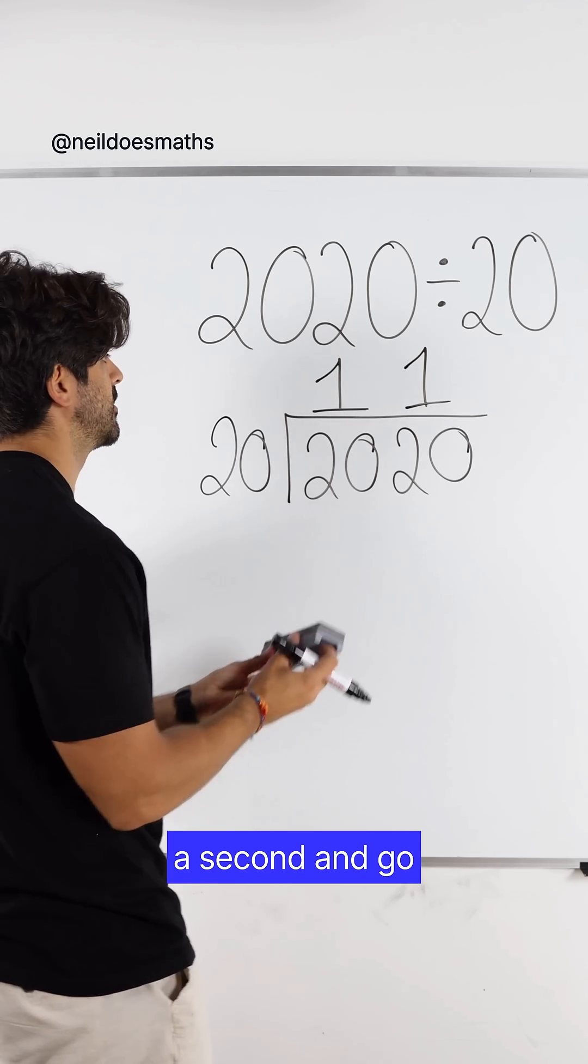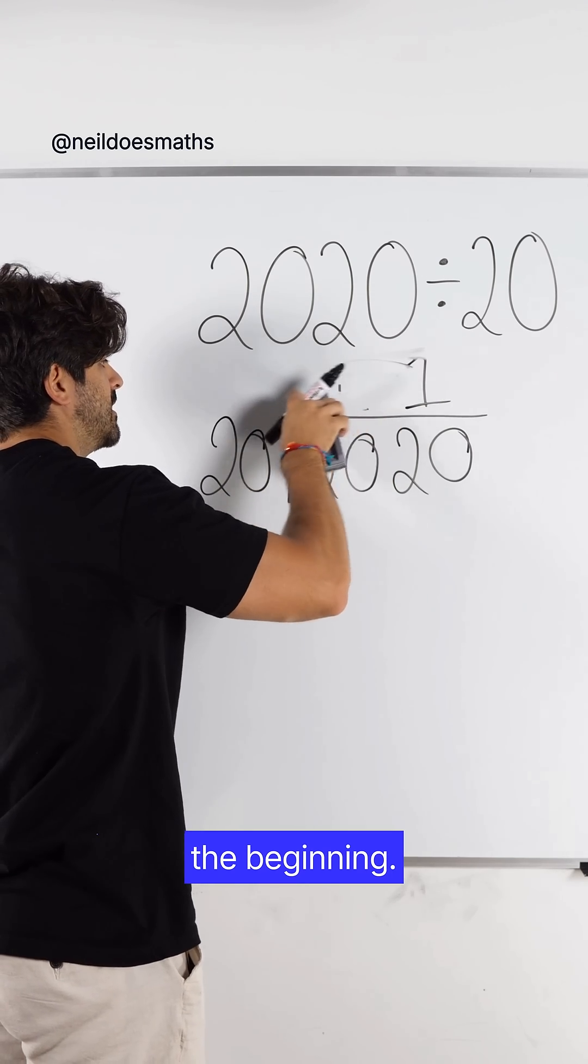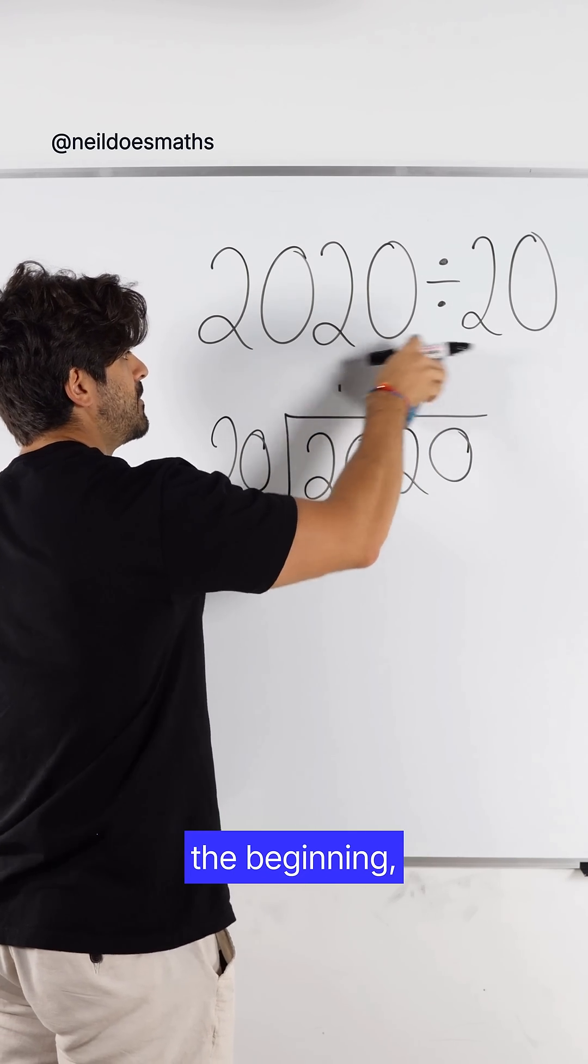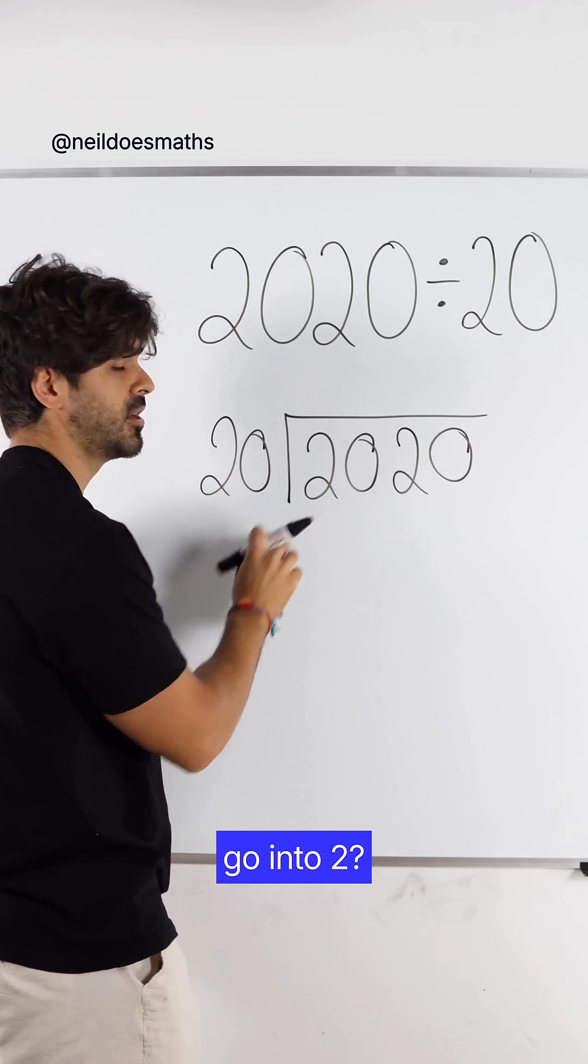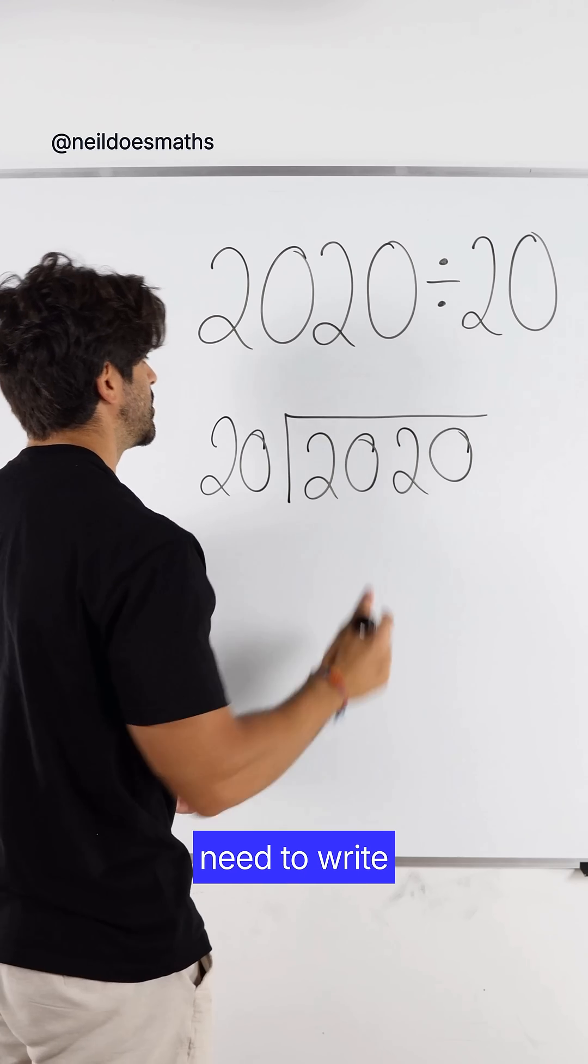Let's just backtrack a second and go back to the beginning. Technically speaking, if you remember at the beginning, we said how many 20s go into 2. Remember, we said 0. You actually need to write that down.